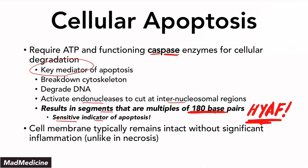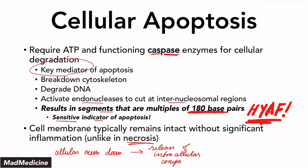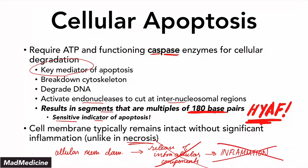The cell membrane, however, is going to remain intact because there is no inflammation happening in apoptosis. In necrosis, when you have cellular membrane damage, this causes a release of intracellular components. Many of these are pro-inflammatory, and when they interact with nearby cells, you get inflammation. But because in apoptosis the membrane stays intact, you are not going to have a release of intracellular components, and you will not have any inflammation. In necrosis, you will.